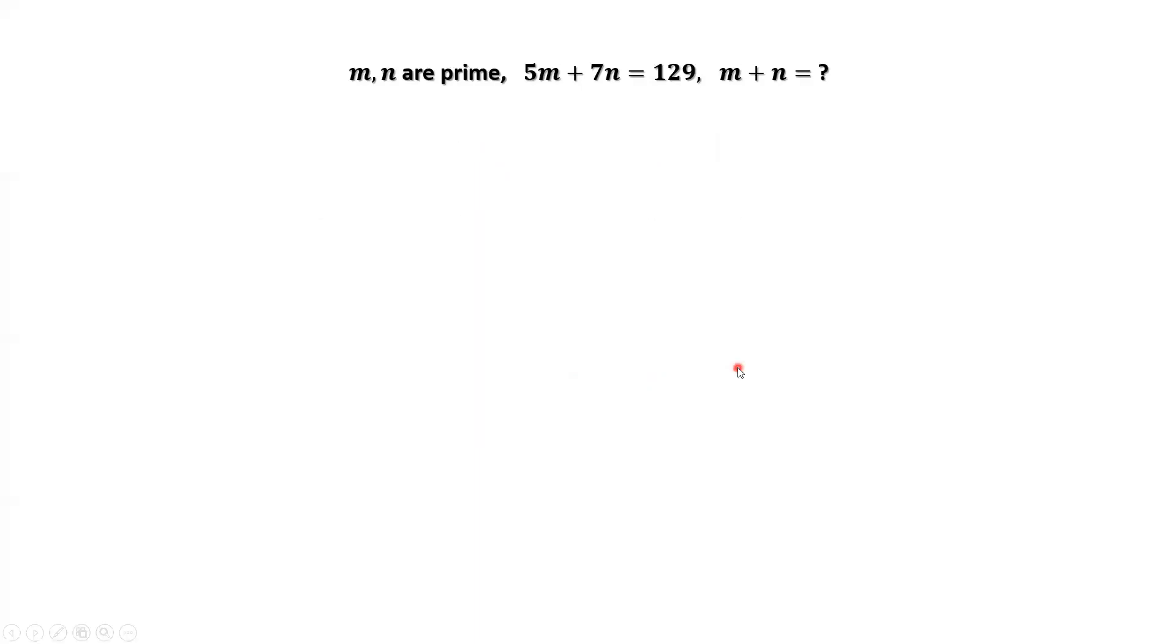For the second situation, if n equals 2, replace n by 2 in this given equation. We have 5m plus 7 times 2 equals 129. To solve this equation, we have m equals 23.